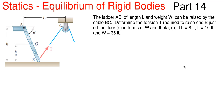So we're going to be covering today's video. We're going to be looking at statics, equilibrium of rigid bodies, and we're going to be looking for some tension forces in a cable. This will be the 14th part in our series. We have this picture with all these dimensions and all these points shown, and it says that ladder AB of length L and weight W can be raised by the cable from B to C. Determine the tension T required to raise end B just off the floor in terms of W and theta as our first part, and then if H equals 8 feet, L equals 10 feet, and the weight of the ladder is 35 pounds.